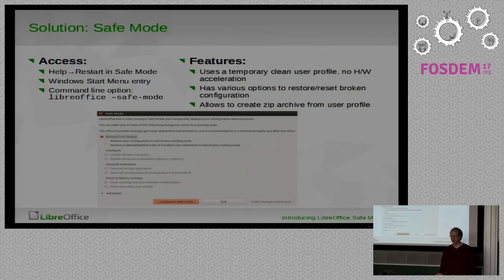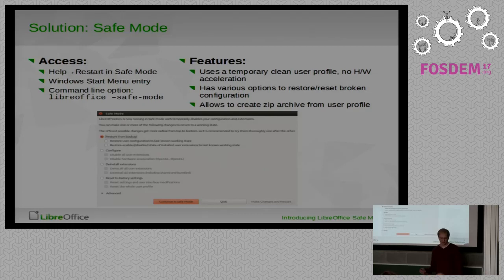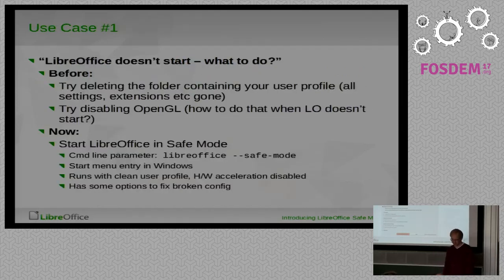What are the features? It uses a temporary clean user profile and it also disables hardware acceleration like OpenGL and OpenCL temporarily, because there were some users experiencing crashes due to OpenGL on startup. When you can't start LibreOffice, you also cannot fix that — only by manually editing the configuration files. When you start it, you get a dialog which has some options to restore and reset several things. It also allows you to create a zip file from the user profile, which helps if you want to send it to someone or upload it on the bug tracker for developers to analyze.